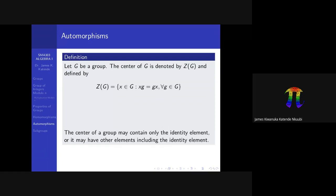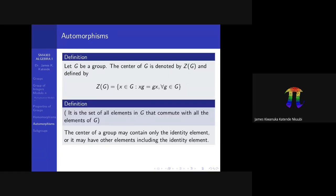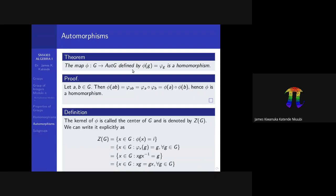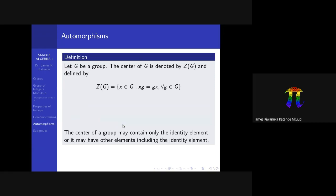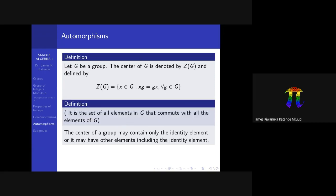You can define the center of a group without referring to the map from G to Inn(G) at all — simply define Z(G) as the set of all elements in G that commute with every other element of G. There are advantages to viewing it as a kernel in some situations, but where that is not useful you can just use this direct definition.